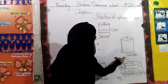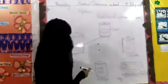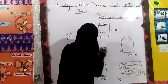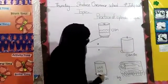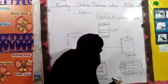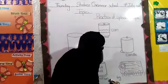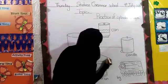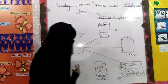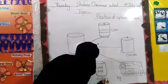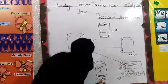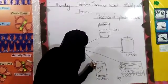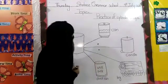Is ke baad yeh kya hai? Candle. Candle ki konsi shape hai? Cylinder. To hum Cylinder ko Candle ke saath match kar dein ge. Is ke baad yeh Log hai. Log ki shape konsi hai? Cylinder. To hum Cylinder ko Log ke saath match kar dein ge. Is ke baad Dustbin hai. Dustbin ki shape konsi hai? Cylinder shape hai. To hum Cylinder ko phir Dustbin ke saath match kar dein ge.